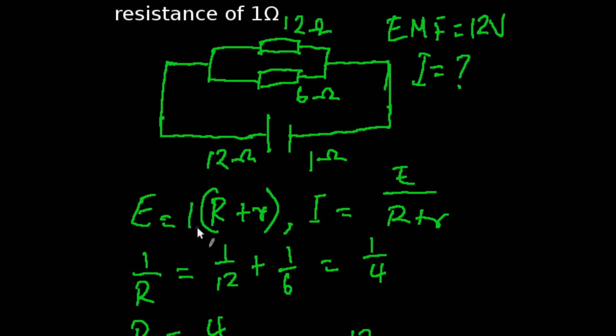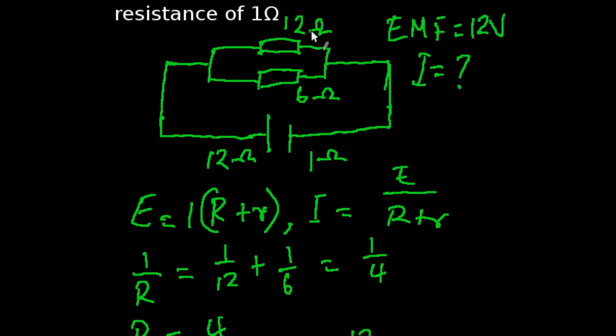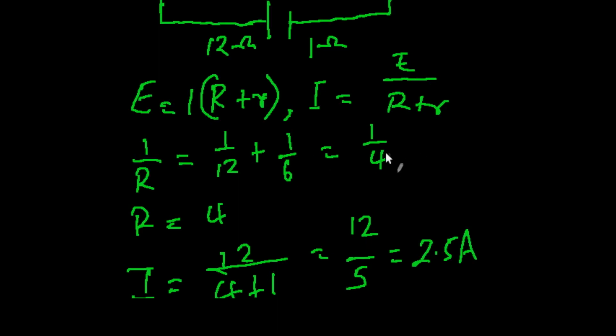So if we make I our current the subject of the formula, we're going to be having I equals E over big R plus small r. So for us to calculate the value of our big R, we're going to be using this formula: 1 over R equals 1 over 12 plus 1 over 6. This is because the 12 ohms and the 6 ohms resistors are connected in parallel. So that's going to give us 1 over 4, our R will simply be 4.